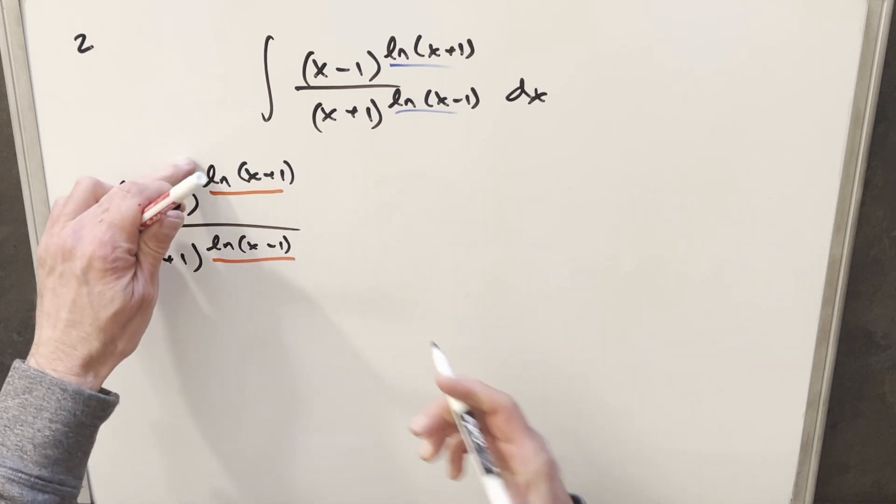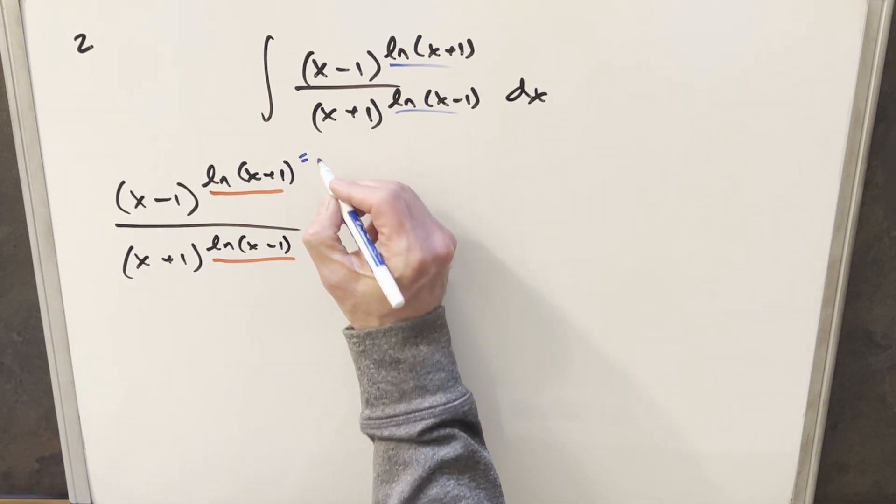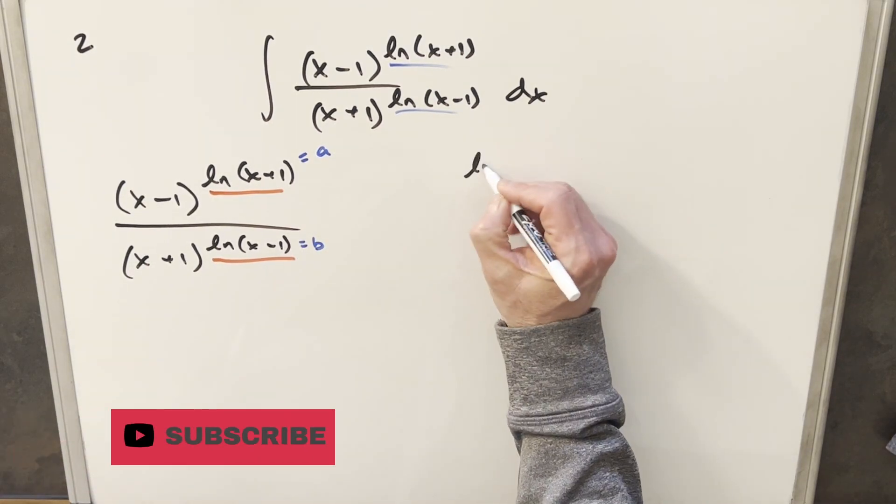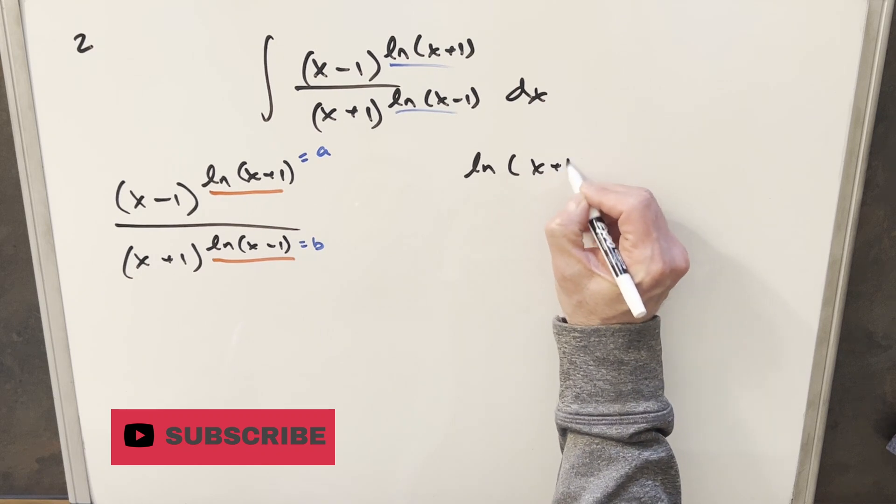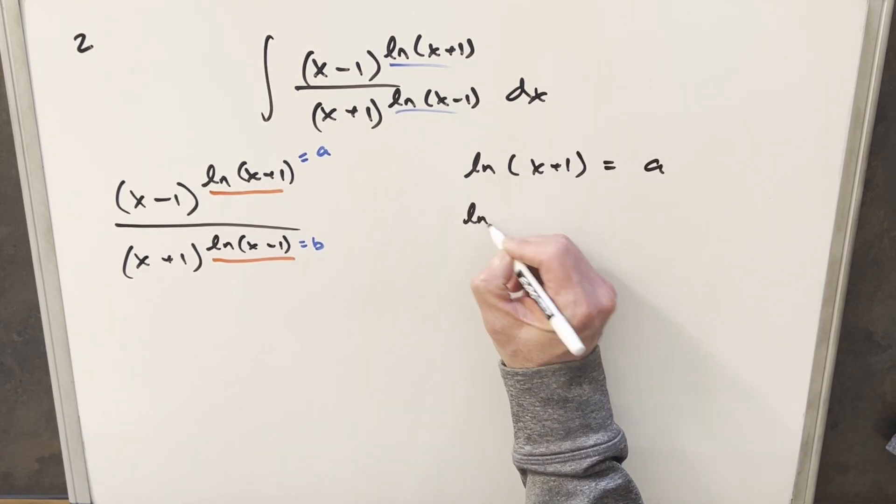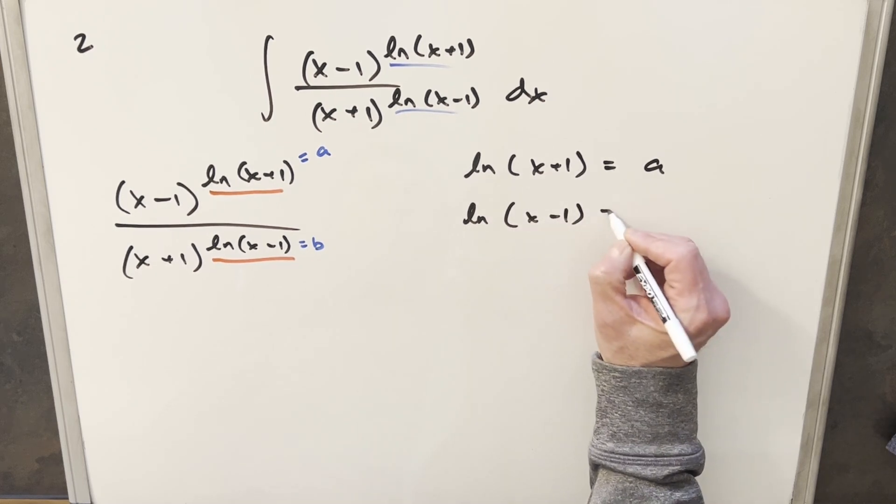So what I can do is call this exponent A and we can call this one B. So coming over here, if I just write this out: ln(x+1) equals A and then we have ln(x-1) equals B.